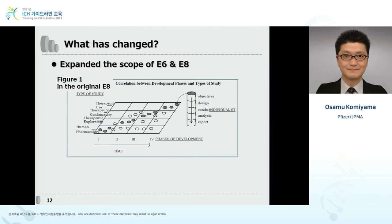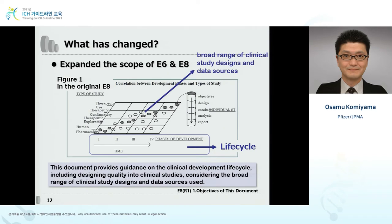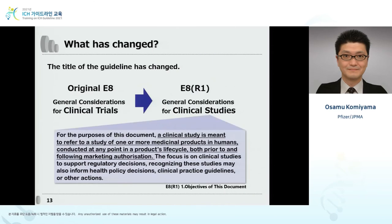What has changed in E8R1? The diagram included in the original E8 had a horizontal axis representing the phase of development, but this has been expanded to the entire product life cycle. In addition, the components now include not only clinical trials, but also observational studies and various research designs and data sources. In this way, the scope of E8 and E6 has been expanded.